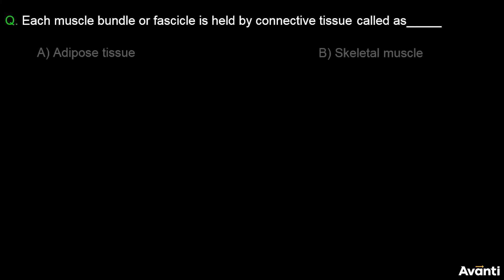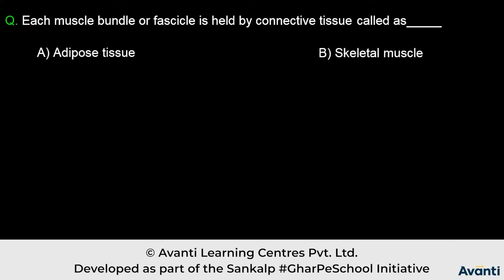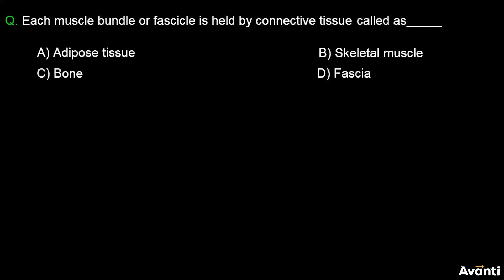Question: Each muscle bundle or fascicle is held by connective tissue called as — Option A: adipose tissue, Option B: skeletal muscle, Option C: bone, Option D: fascia.